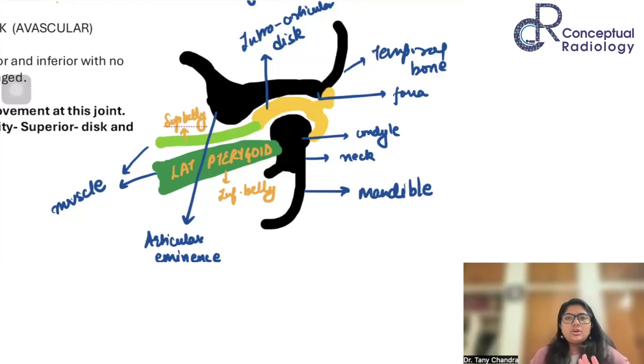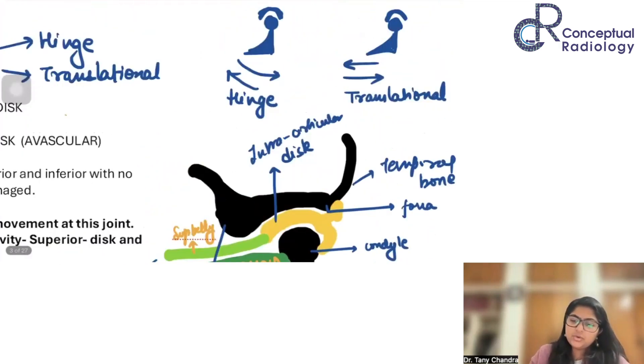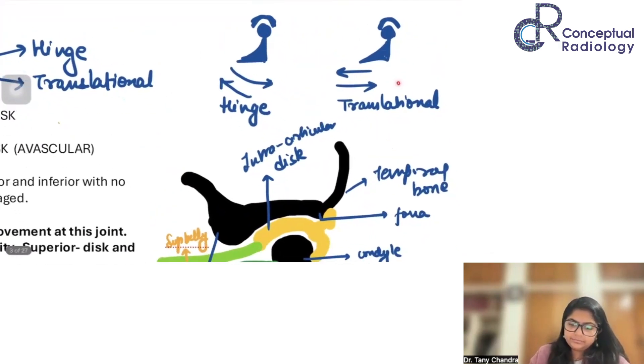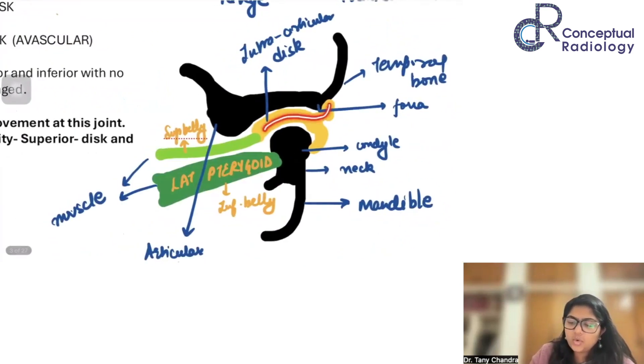Now we have understood the components of this joint. We have understood the bones, the movement which is going to happen. We have understood that it has its own disc in between, which is acting like a shock absorber. And it's kind of dividing this synovial joint into two compartments.